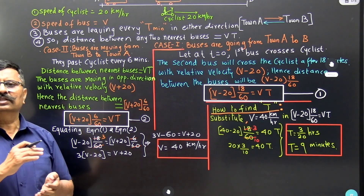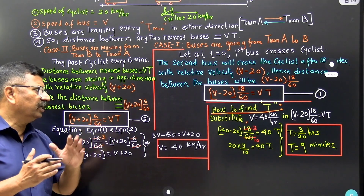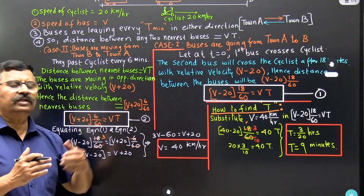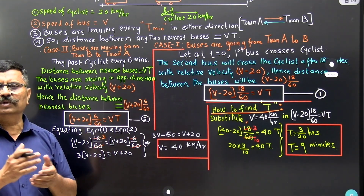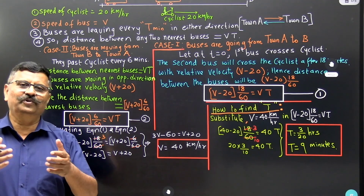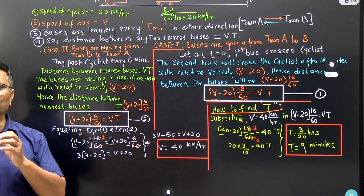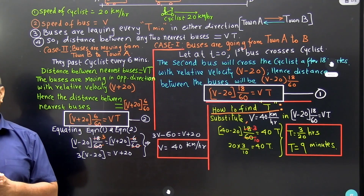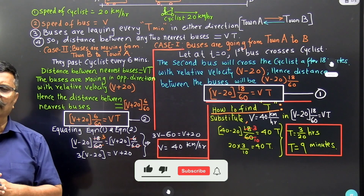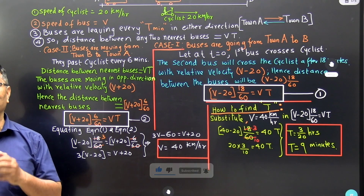Therefore the answer is: the buses ply with a constant speed of 40 km per hour, and the time interval between two consecutive buses is 9 minutes. I hope all of you understood this problem. If you want to perform well in JEE, NEET, and MSCT examinations, I strongly recommend subscribing to our channel. Thank you.